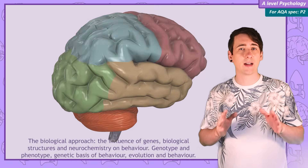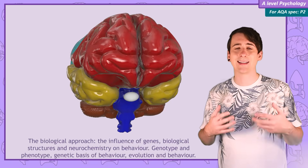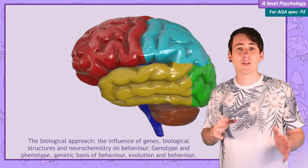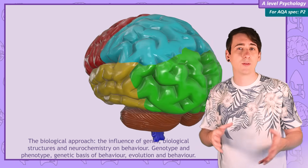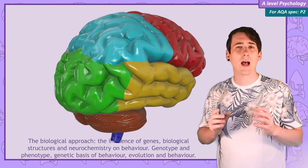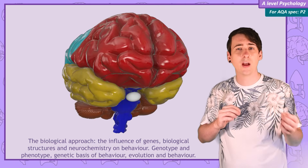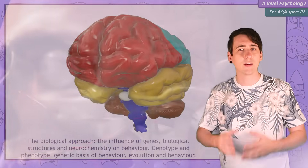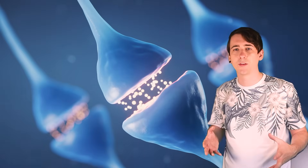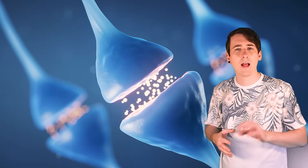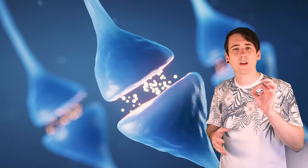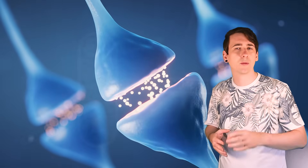Psychologists have divided the brain into different areas and identified large structures. These structures have different roles and communicate with each other, as well as sending and receiving information to and from the rest of the body. The brain's functioning is influenced by chemical signals from the body called hormones, and between individual neurons — the cells that make up the brain — there are neurotransmitters that control neural communication.